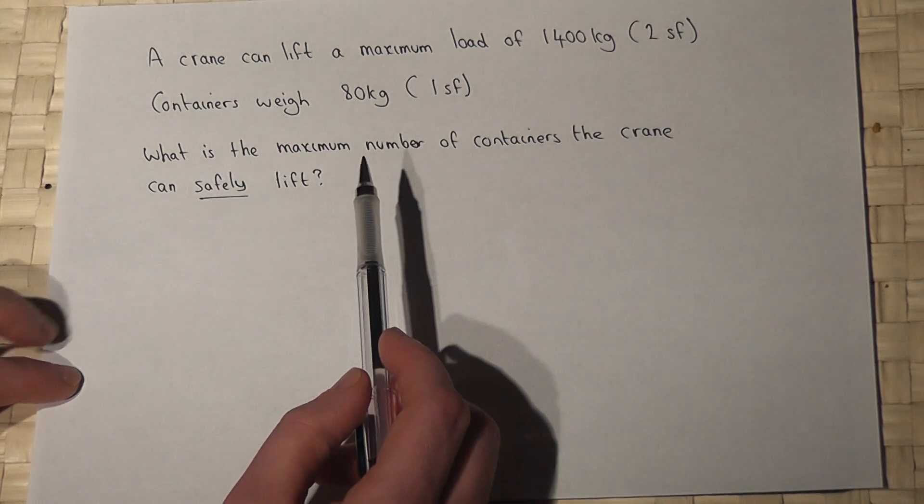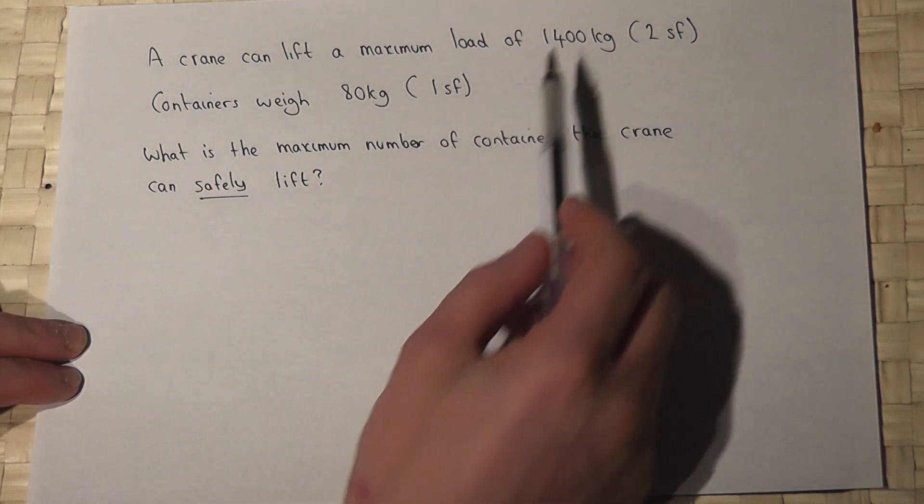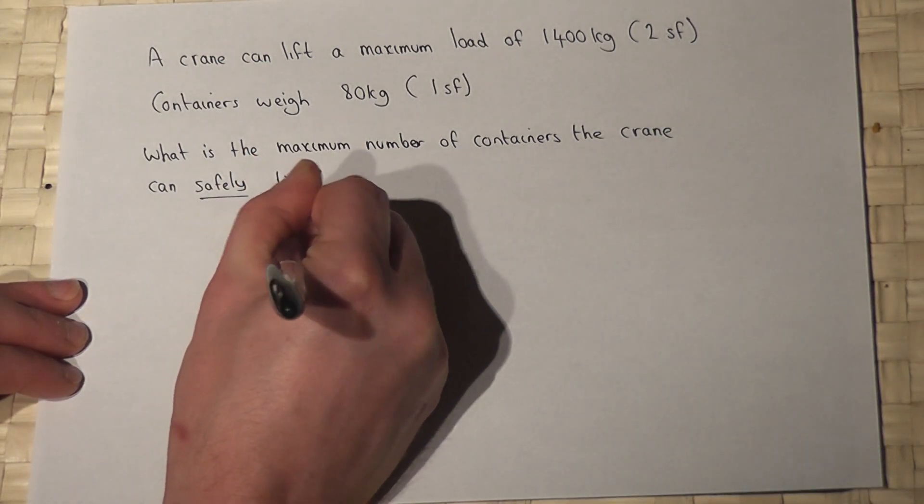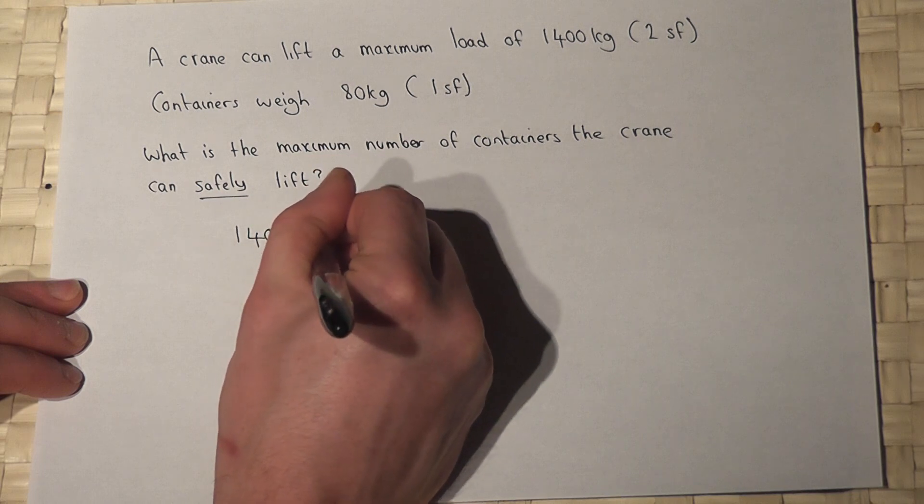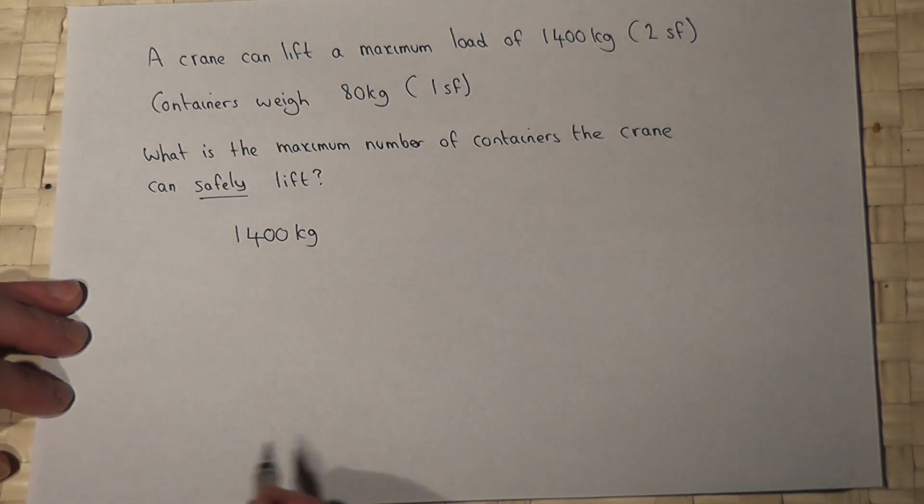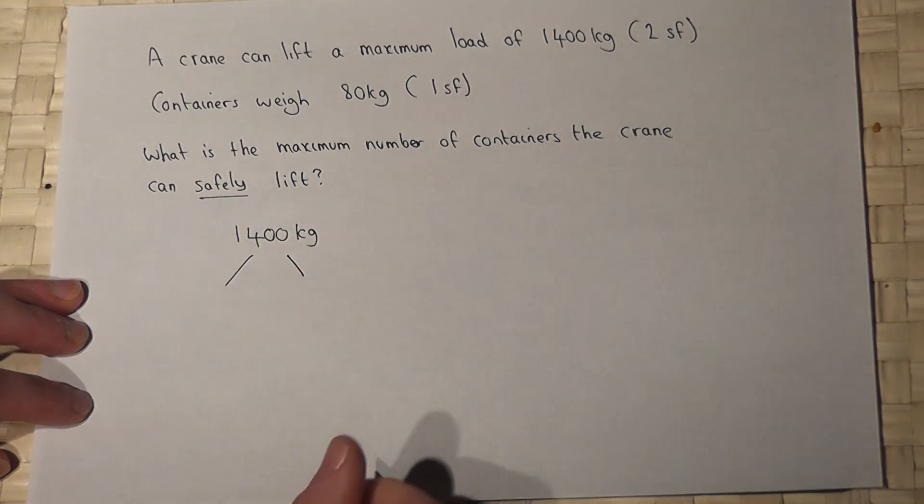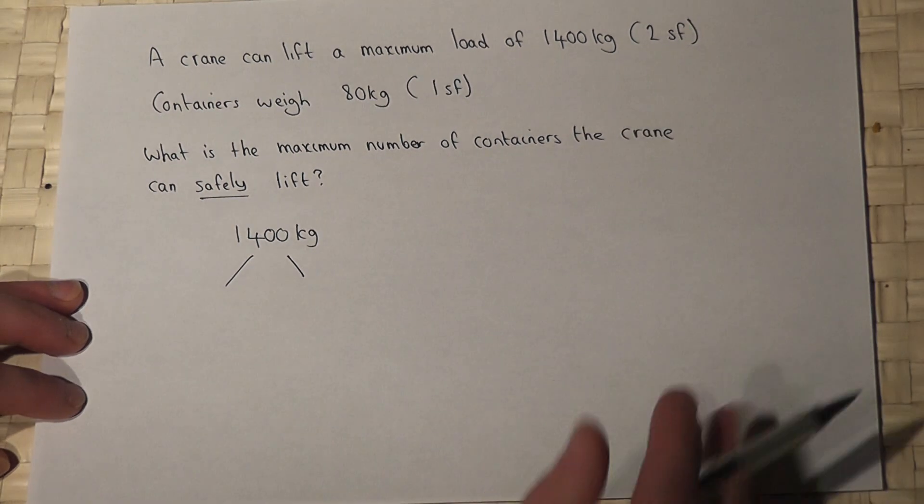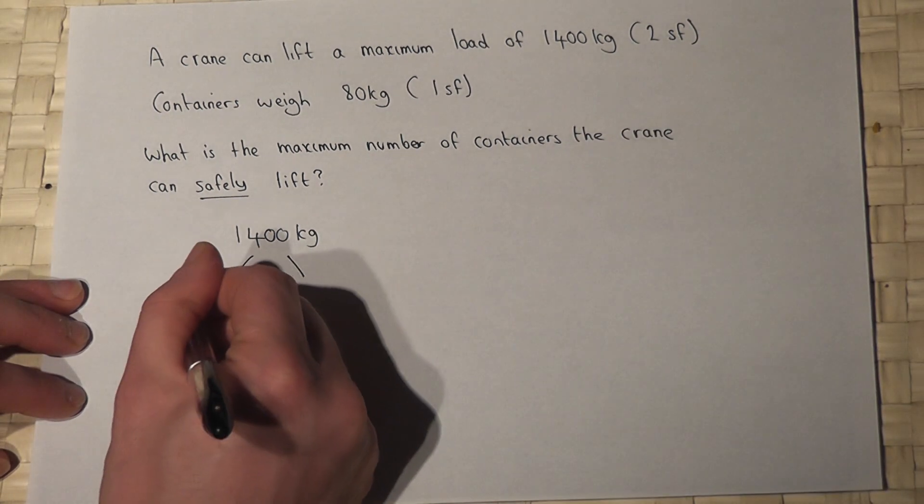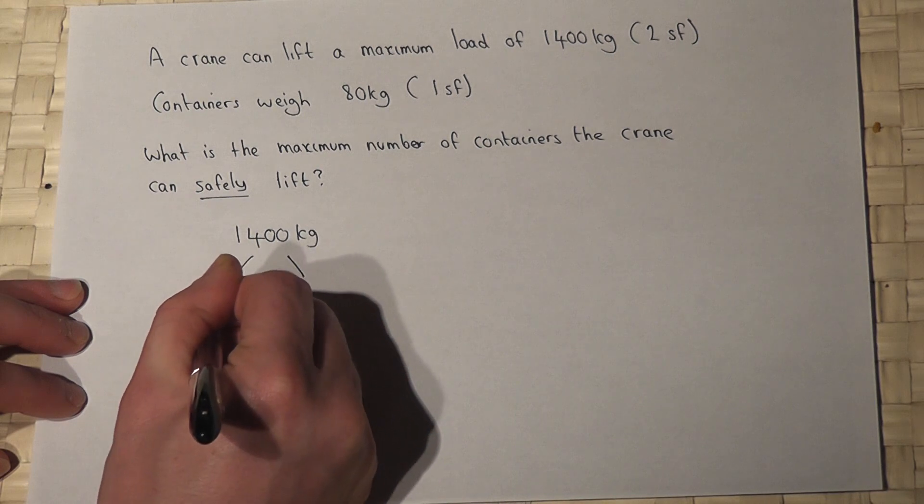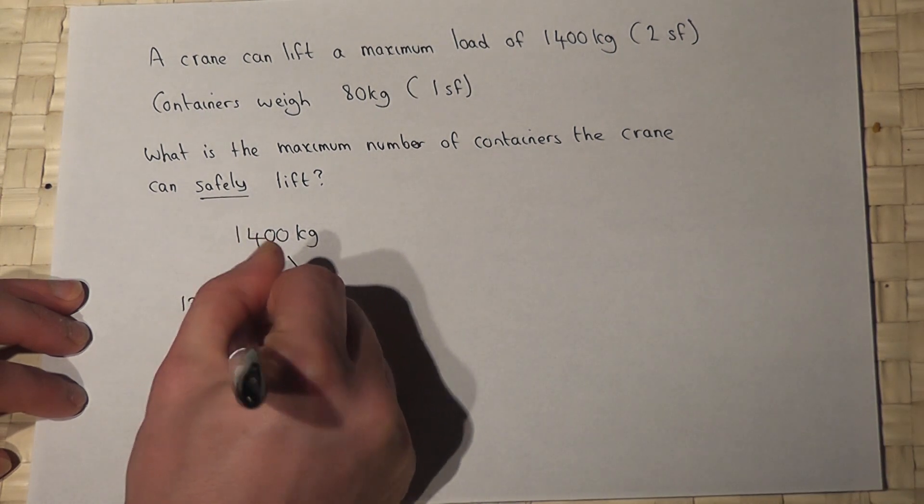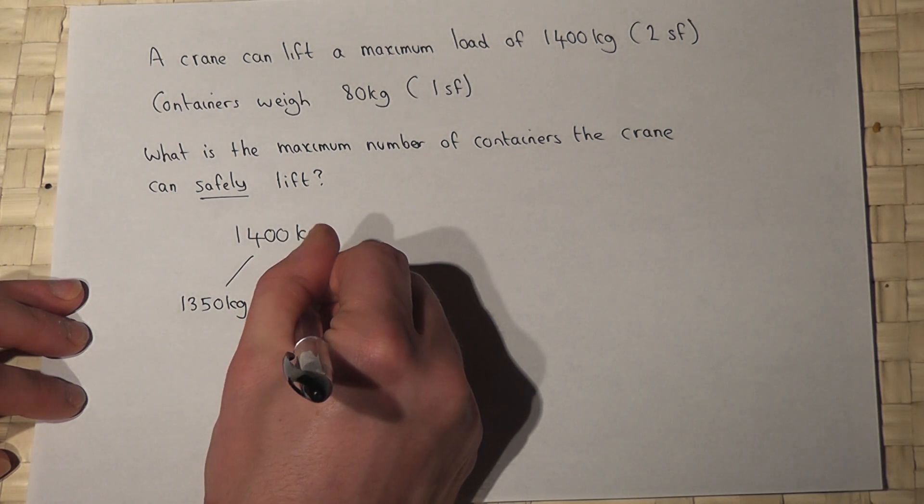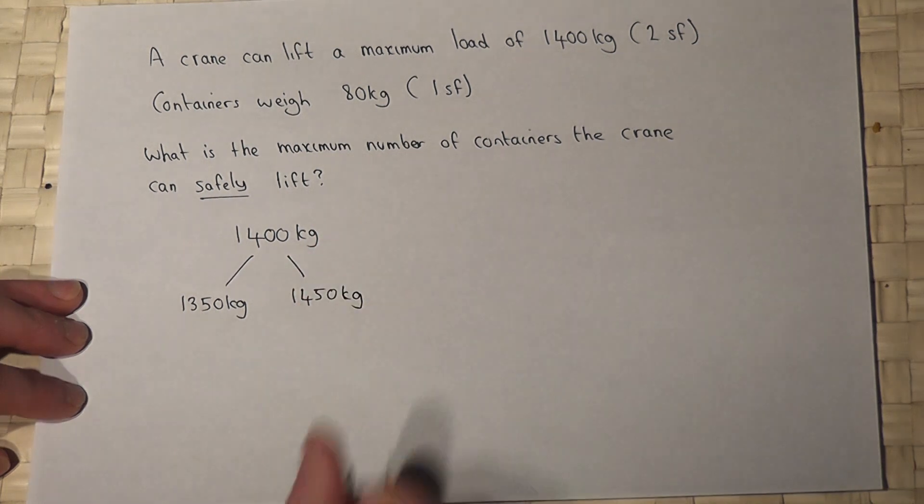These two numbers have been rounded, so if we look at the crane, whilst we know it can lift 1,400 kilograms on average, if we look at the error bounds to two significant figures, then potentially it could lift as few as 1,350 kilograms or maybe it could lift as many as 1,450 kilograms.